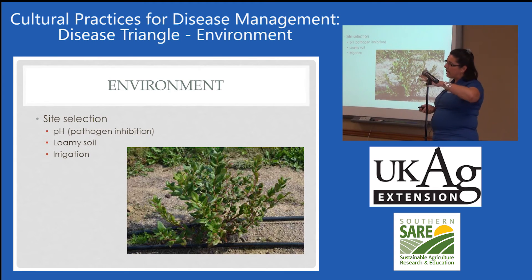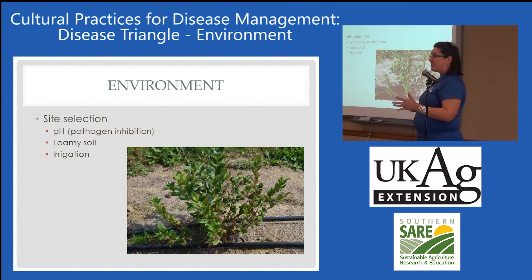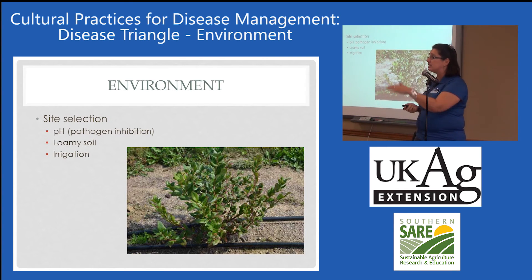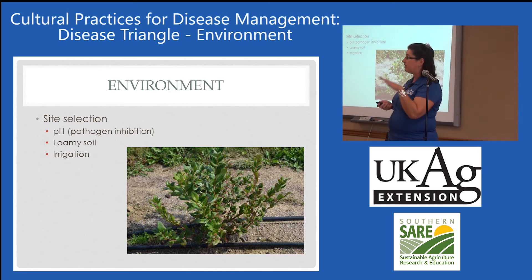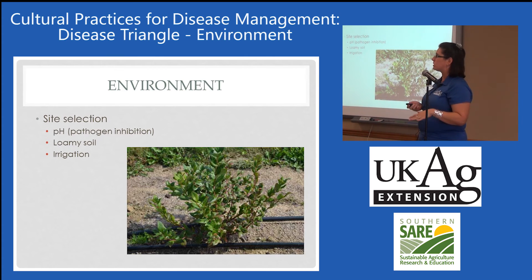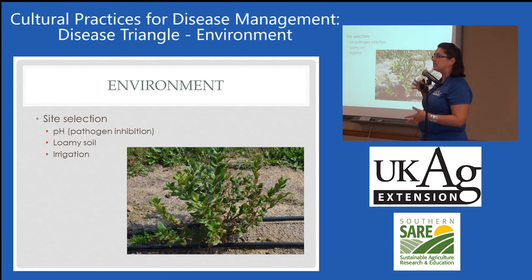Talking about pH again under environment — pathogen inhibition can be a really big deal. The Phytophthora pathogen, for instance, is inhibited by lower pH. Anything under about 4 is really going to inhibit the movement of those swimming spores — those zoospores that I'll talk about later. So pH can really make a difference in terms of the pathogen.